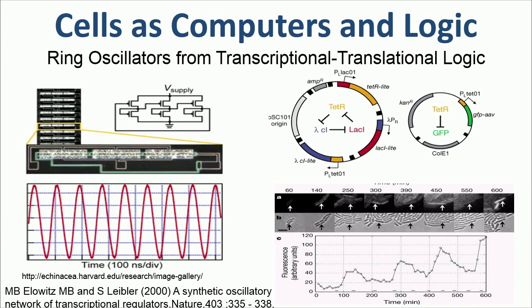The other thing we can do in synthetic biology that constitutes programming is actually create universal logic. This was a classic paper by Mike Elowitz, who's now at Caltech. Basically what he said is that whenever we build something in the semiconductor space — a chip — one of the test circuits we build is a ring oscillator, a couple of transistors where the output of one turns off the input of the next, and the last one is strung back to the first. Mike asked: is it possible to build that out of genes? And the answer turns out to be yes.